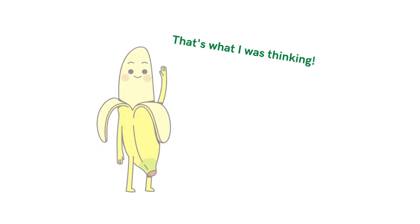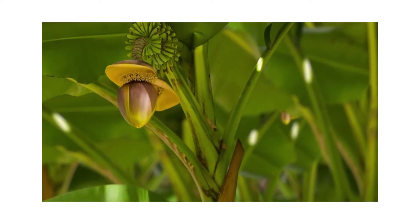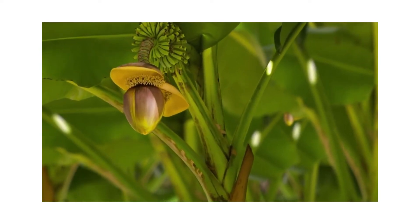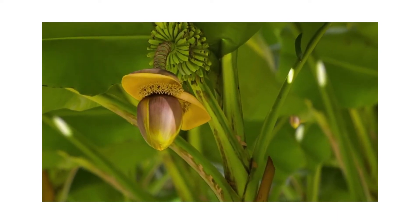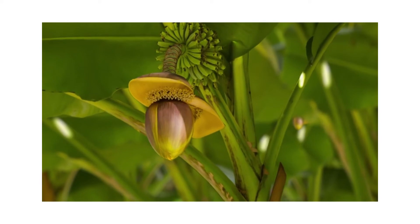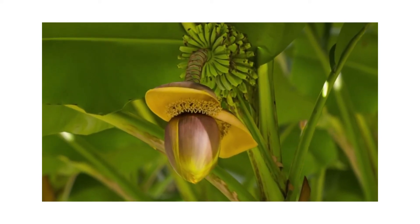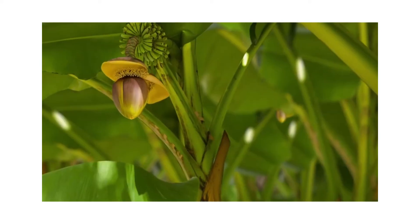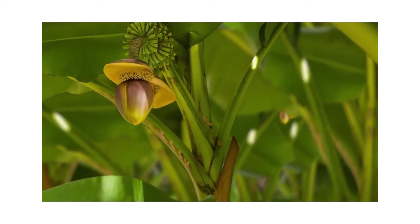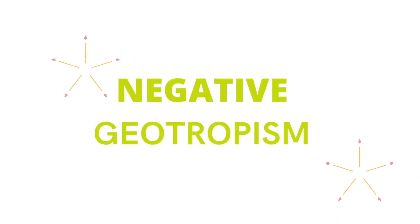When a bunch of bananas start to grow, they actually hang downwards initially, and then as they continue to grow, they start to grow upwards towards the sun so that their bottoms face the sky. So they do indeed grow upside down. This happens because their growth hormone triggers a phenomenon known as negative geotropism, which simply means to grow against gravity.